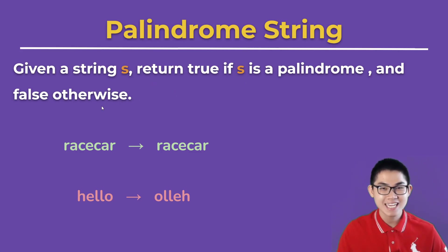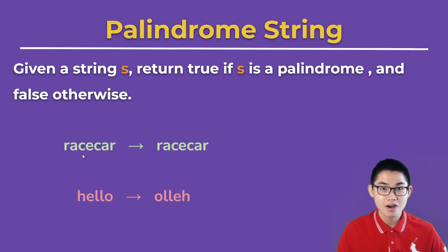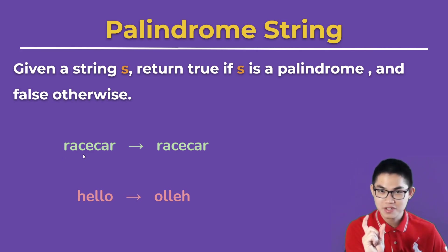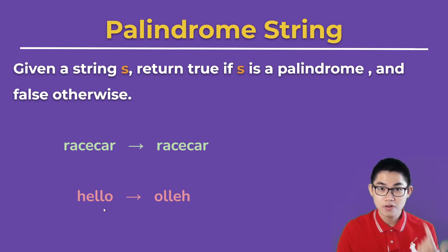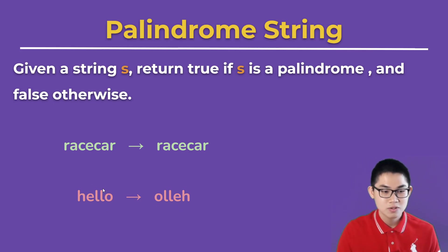So first of all, what exactly is a palindrome? It's very easy. If you have a string like the word 'racecar' and you reverse it, this word is the same as the original — which makes it a palindrome. Now, if you look at 'hello' and you reverse it, the reverse version is not the same as the original. So 'hello' is not a palindrome.